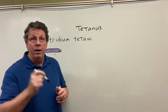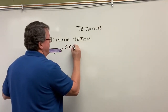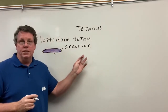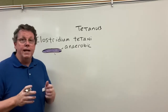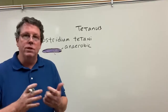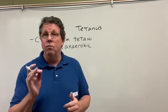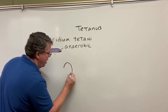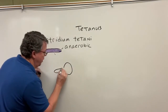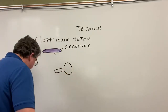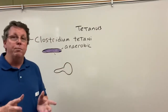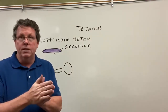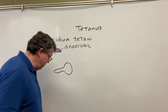Tetanus is also anaerobic, meaning it does not survive in oxygen. So when it's outside of a person or away from oxygen, what it will do is form spores. A spore is basically a protective covering that bacteria put over themselves — you can almost think of it like a seed shell.